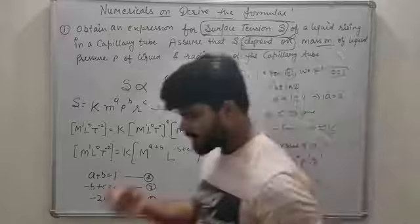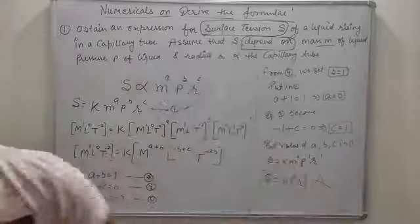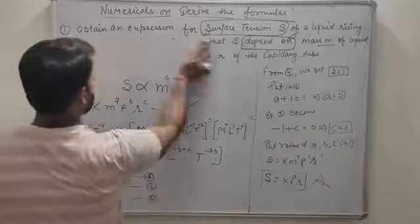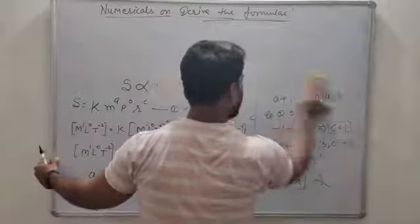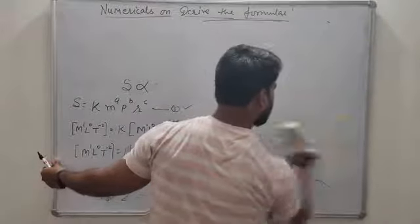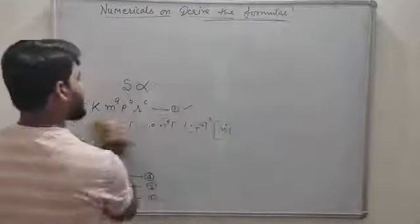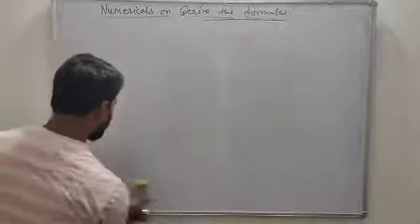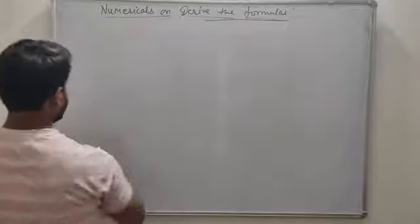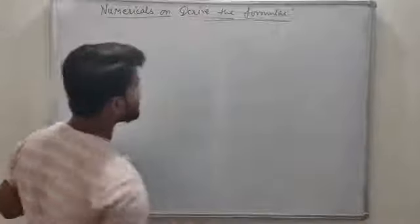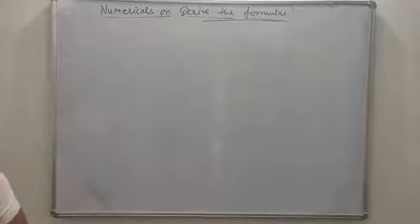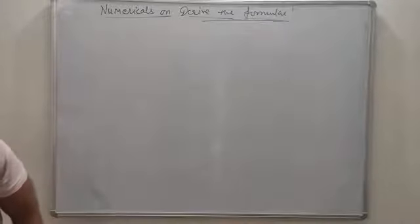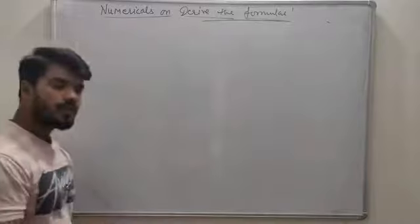चलिए एक दूसरा numerical करते हैं — क्या उसमें कुछ difference है method में, या as it is ऐसे ही चलेंगे सारे के सारे? जैसा कि मैंने पहले बोला — सारे एक जैसे हैं। Just physical quantities अलग-अलग आती जाएंगी और उस हिसाब से dimensional formula भी अलग-अलग आएगा। Second example: calculate the dimension of linear momentum।